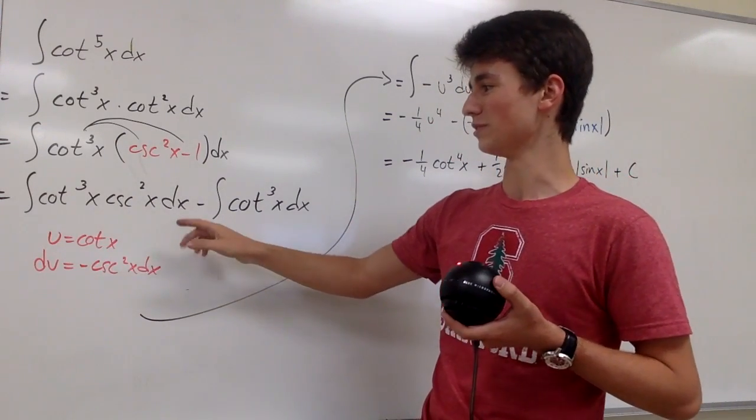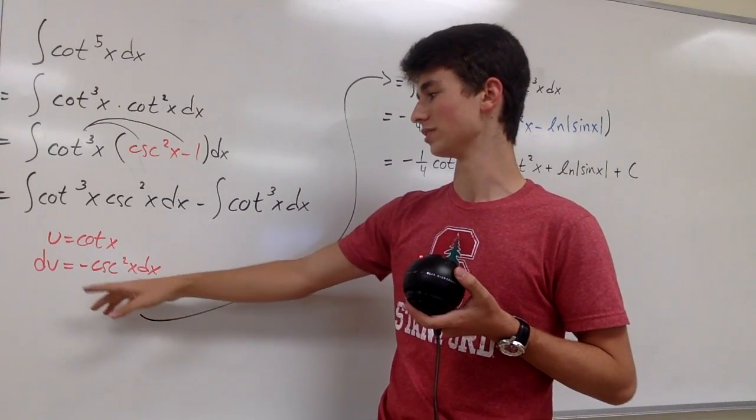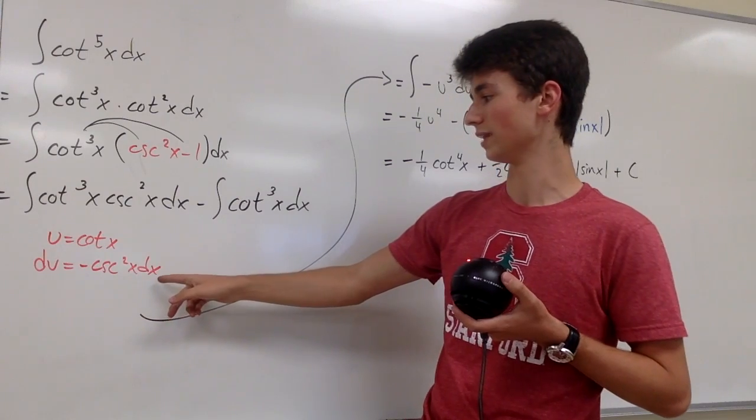For this integral, we can use a u substitution where u is equal to cotangent of x. If we differentiate, we get du is equal to negative cosecant squared of x dx.